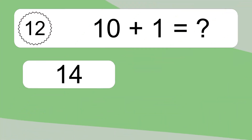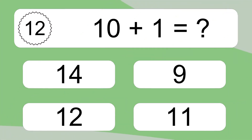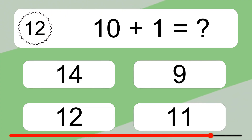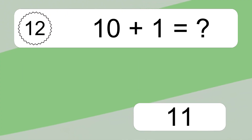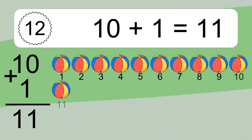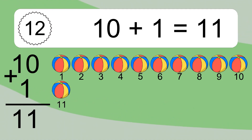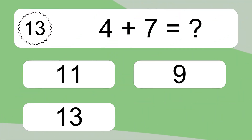Ten plus one equals what? Ten plus one equals eleven. Let's count it: one, two, three, four, five, six, seven, eight, nine, ten, eleven.